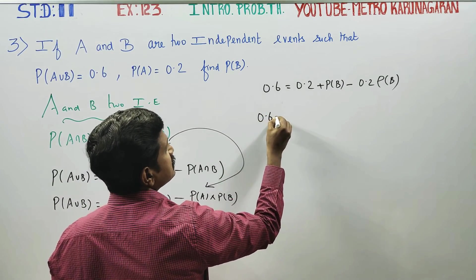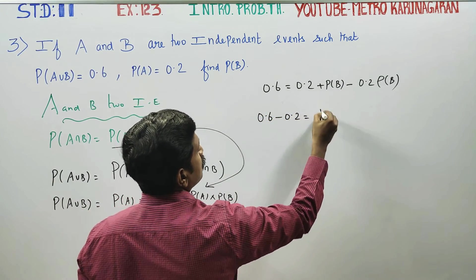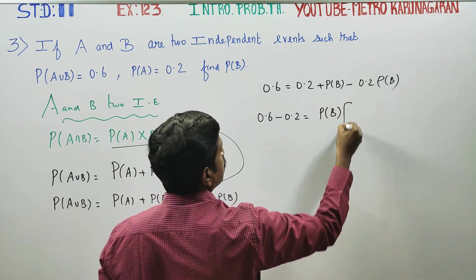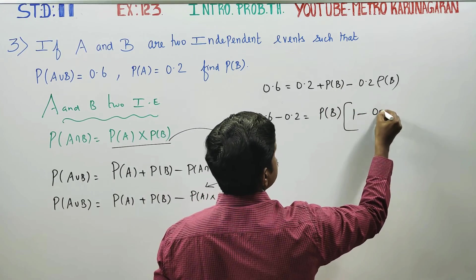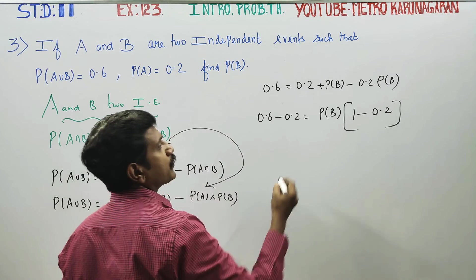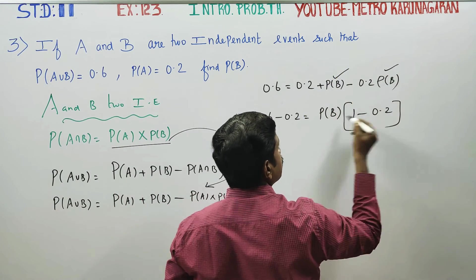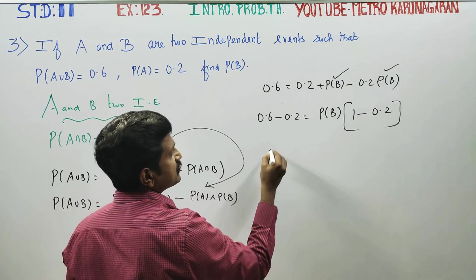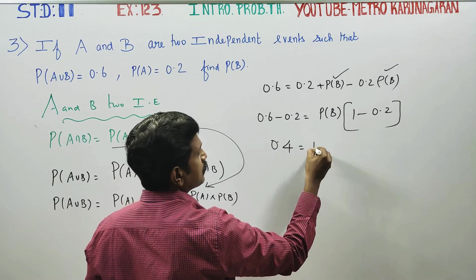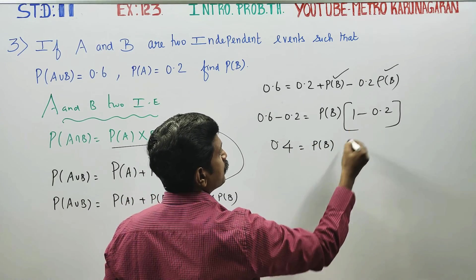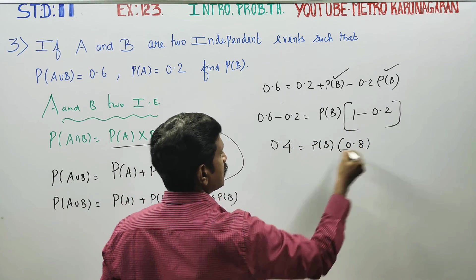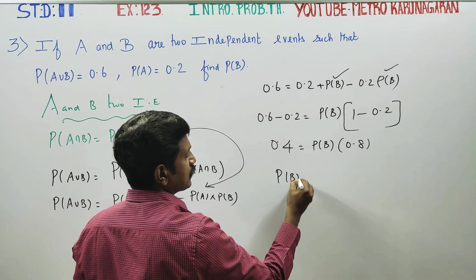Taking terms to one side, 0.6 minus 0.2 is equal to probability of B times 1 minus 0.2. So 0.6 minus 0.2 gives 0.4, which is equal to probability of B times 0.8.